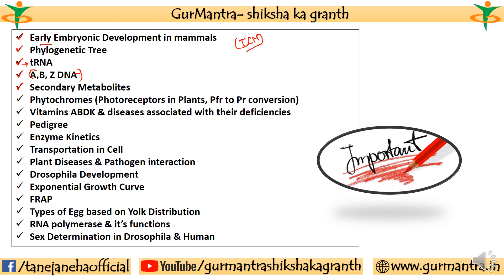Again secondary metabolites par question tha, phytochromes par question tha, like photoreceptors par, PFR to PR conversion par questions were there. Vitamins par questions were there, A, B, D, K, and inse agar inki deficiency hoti, toh unse related kya jo hai diseases hongi, question was there.